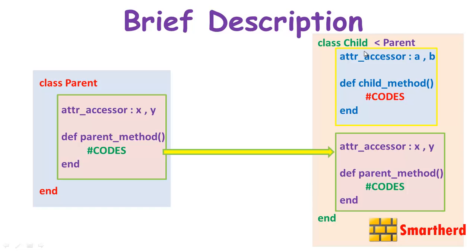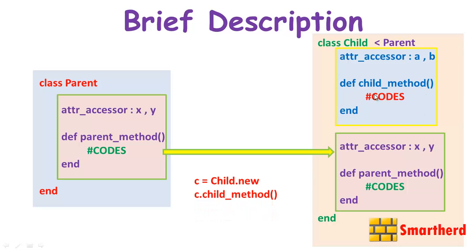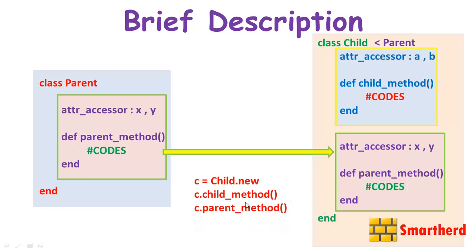To access all the contents of the class Child, including x, y, and parent_method, we define an object: c = Child.new. To access the child's own method we write c.child_method. To access the inherited method we write c.parent_method. Due to inheritance, we can access the contents of the parent class through the child class.